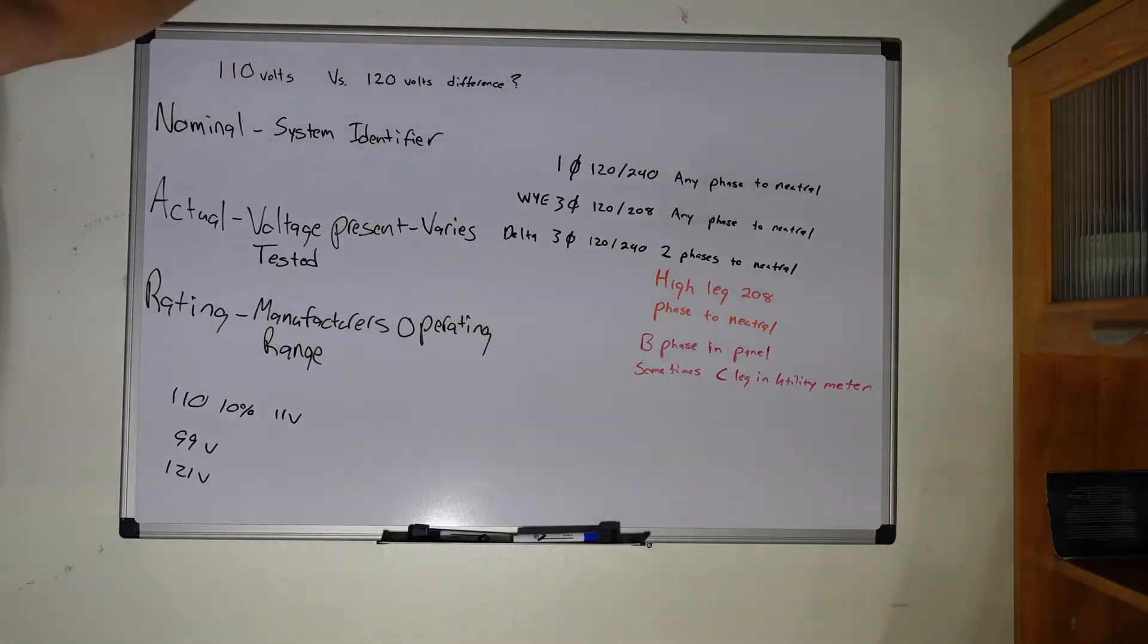On a wye three-phase 120/208 system, same thing, you can take any phase to neutral and that will give you 120. On a delta midpoint three-phase 120/240 system, two of those phases to neutral will give you 120, and then you have the high leg which is 208 phase to neutral.